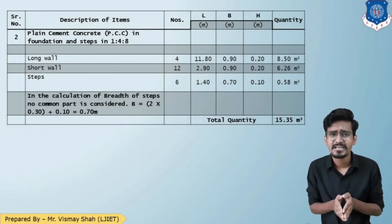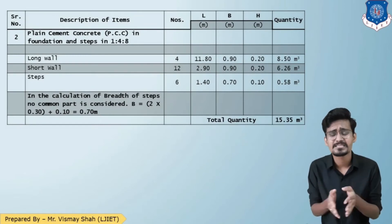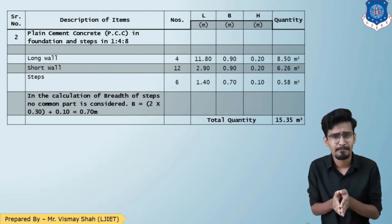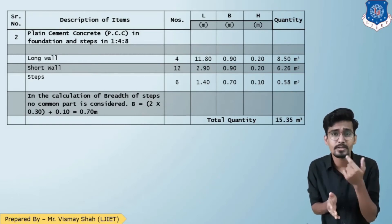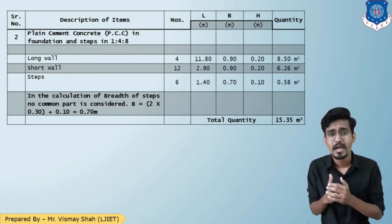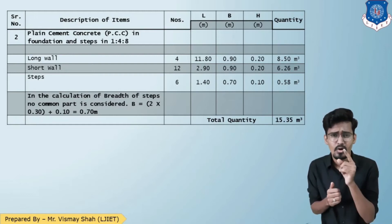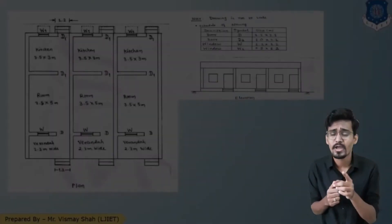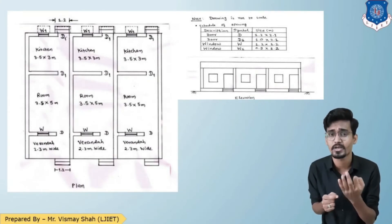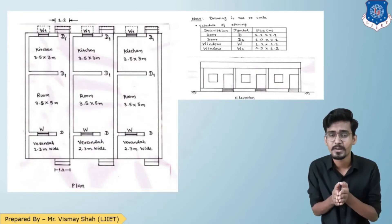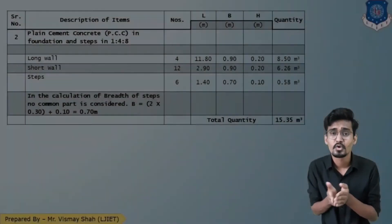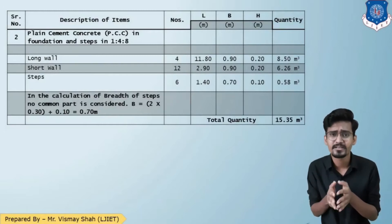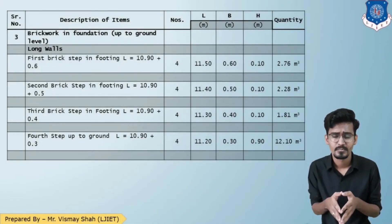The second quantity is PCC. The length and breadth values are the same as for excavation; only the height changes. The PCC thickness is 0.20 meter. For steps, the width B is the original 0.7 m since PCC is at different levels. There are 6 units of steps — three rows with front and back ends each. The PCC quantity is 15.35 cubic meters.